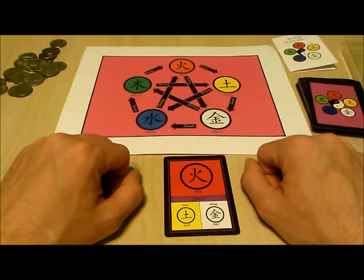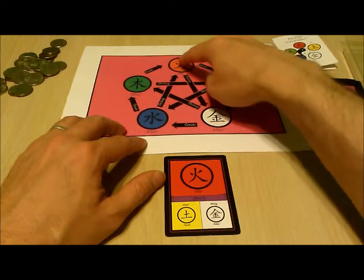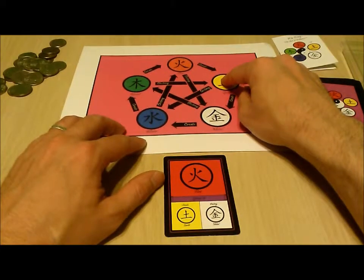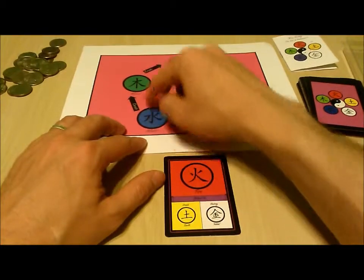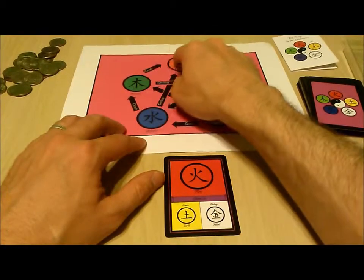The dragon card is played immediately when it is drawn and causes all the tokens on the board to shift one space to the right. So the tokens on fire go to earth, the tokens on earth go to metal, the tokens on metal go to water, the tokens on water go to wood, and the tokens on wood go to fire.